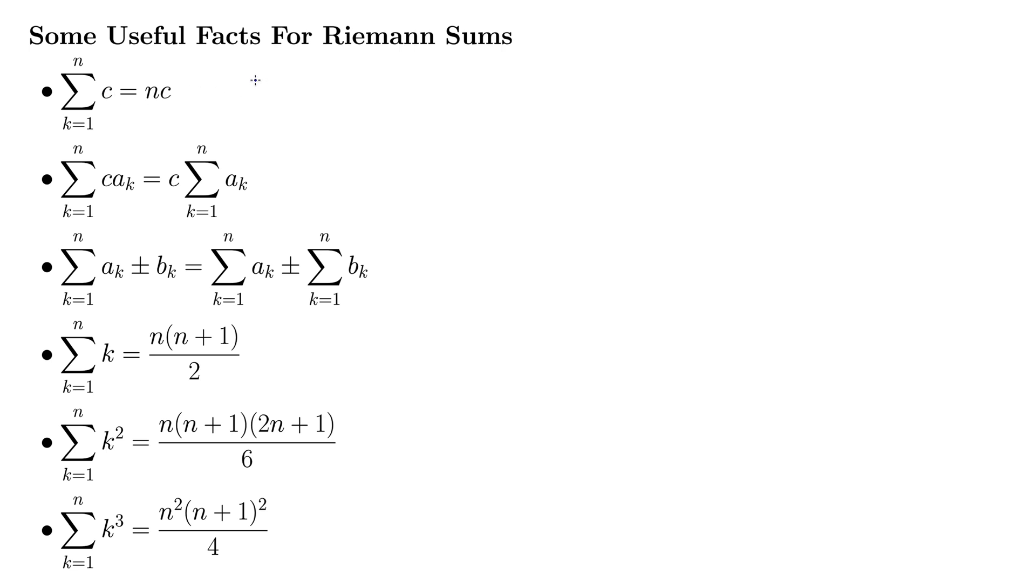If we add 5 over and over again, 5 plus 5 plus 5, plus 5. Say we did it 4 times, that would be the same thing as 4 times 5. That's all that's saying. So that one's pretty self-evident.